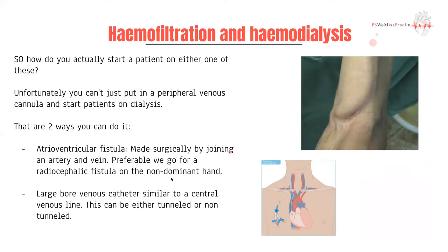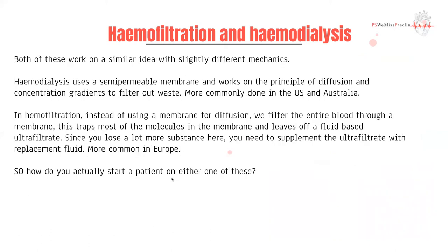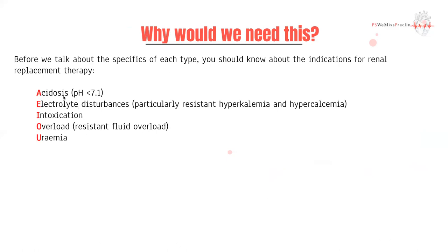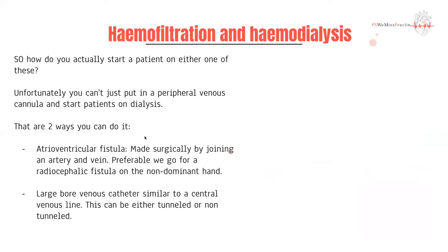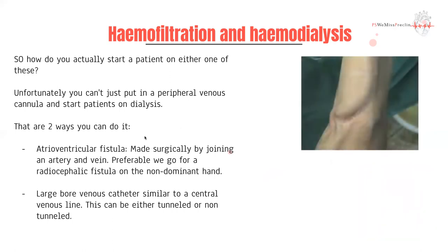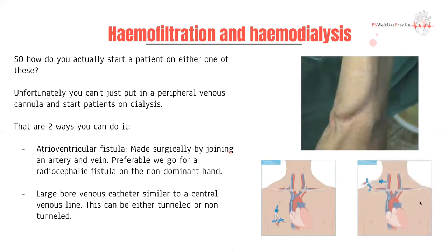Going back to our indications — acidosis, electrolyte disturbances, intoxication, fluid overload, uremia — most of these are acute complications. It would be very hard to get an arteriovenous fistula done in time for someone presenting with a pH of 7.0, which is why the modality chosen depends on how urgent the need is. For acute situations like electrolyte disturbance or acidosis, we go for a central line. The non-tunneled catheter is fastest and easiest; the tunneled one lasts longer with lower infection rates but is harder to perform.